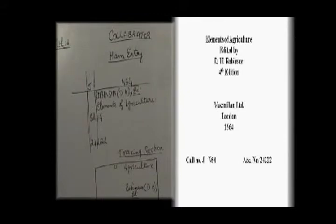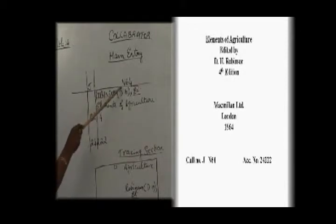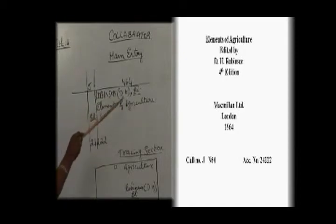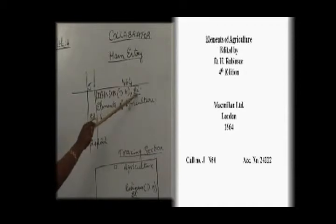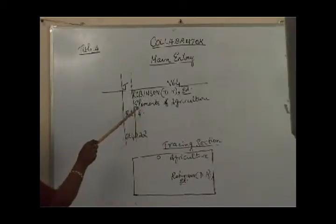Now the example for collaborator as author: if a document is given without an author's name, we consider the collaborator as author, so in the heading section we use the collaborator's name. The class number is J and the book number is N64. Here instead of an author we have only the editor's name, so we consider the editor as author. The entry element 'Robinson' is in capital letters, the rest of the names — DH — within parenthesis. To show the descriptive element, it is connected by a comma and the abbreviated form 'ed.' is underlined.